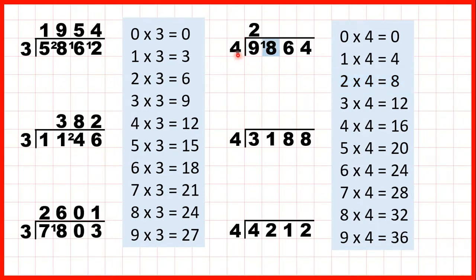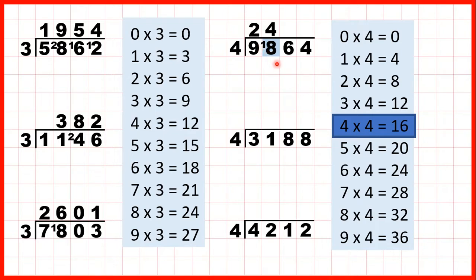Now we have 18 divided by 4. The closest number to 18 which is not more than 18 is 16, and that's 4 times 4, so we write 4 in our answer line. But 4 times 4 is only 16. To get to 18 we need to add 2, so that 2 is our remainder, which we write in front of the next digit.